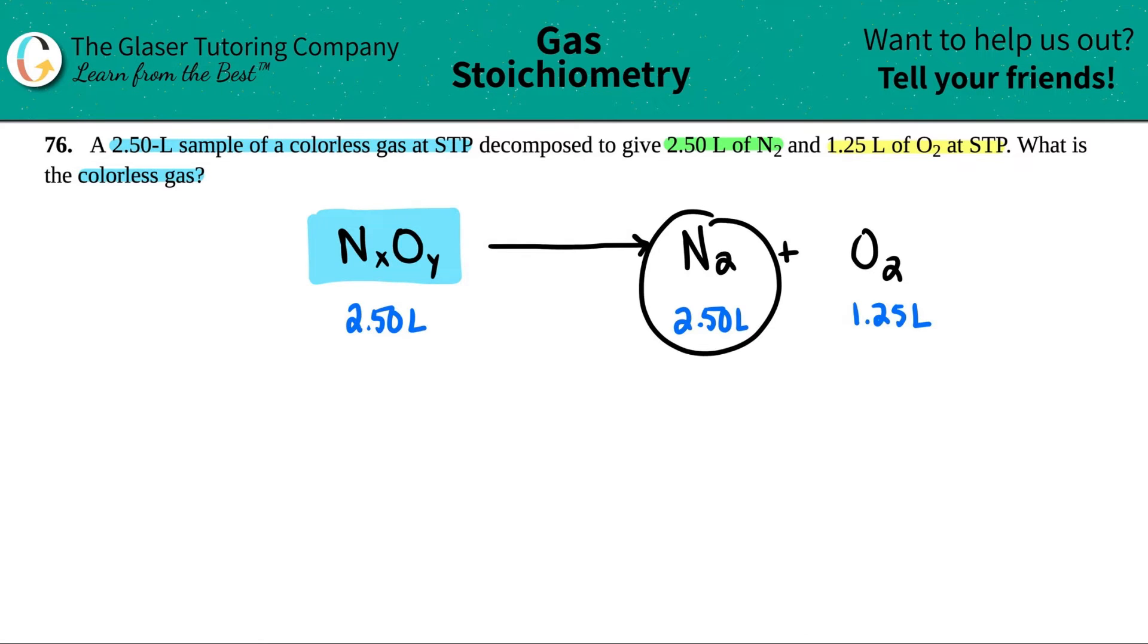Now, if we're saying that we have 2.5 liters, or maybe I'll put this in parentheses, 2.5 moles of N2, and we have the same amount of liters, aka the same amount of moles, how many nitrogens do you think we have? On this side, we had two of them. So how many do you think we have? Yeah, two.